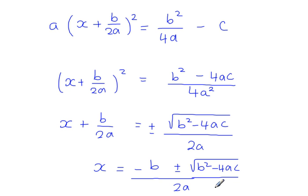So as you can see, the quadratic formula comes from completing the square when you start with ax squared plus bx plus c equals zero.